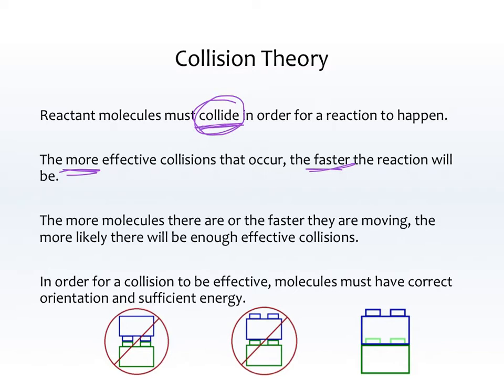The more molecules there are, or the faster they're moving, the more likely there will be enough effective collisions. An effective collision is not only just some molecules hitting each other, but actually hitting each other to make a product. So in order for a collision to be effective, molecules must have correct orientation and sufficient energy.